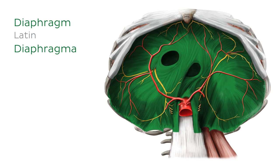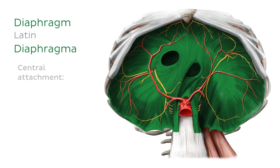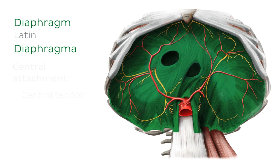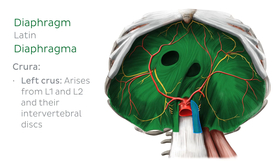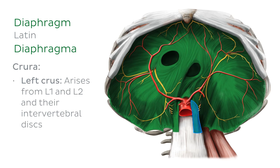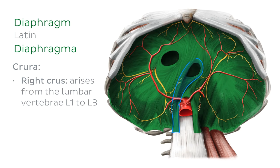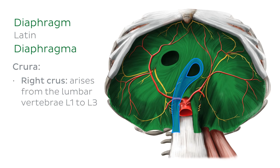The muscle fibres of the diaphragm converge at the central attachment, which is the central tendon. The parts of the diaphragm that arise from the vertebrae are tendinous in structure and are known as the left and right crura. The left crus arises from L1 and L2 and their intervertebral discs, and the right crus arises from the lumbar vertebrae L1 to L3.